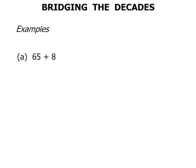Examples. 65 plus 8. Now to use this bridging the decade technique, we think of 8. We had 65. We need another 5, don't we? So we're going to break the 8 as 5 and 3.